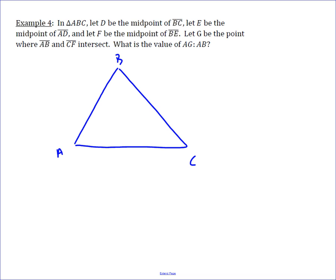We got a triangle ABC. D is the midpoint of BC, E is the midpoint of the segment we just drew AD, and then F is the midpoint of BE. So we take our time and we get it drawn, and then it says let G be where AB and CF intersect. So that's going to be right about there.